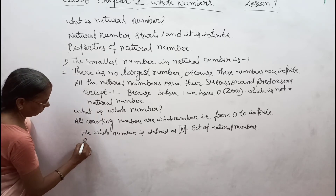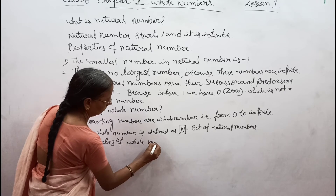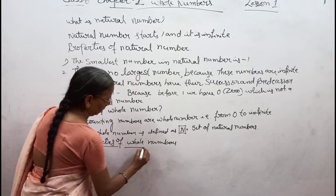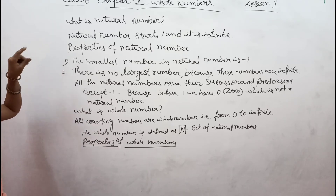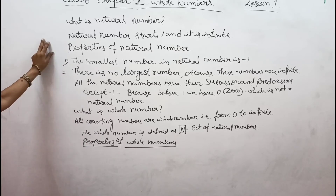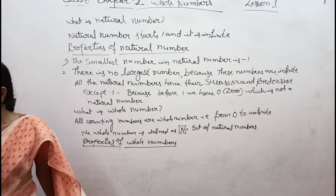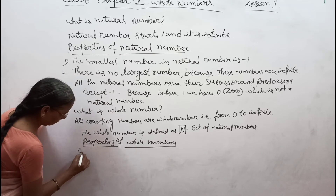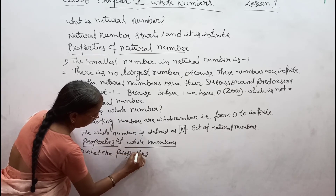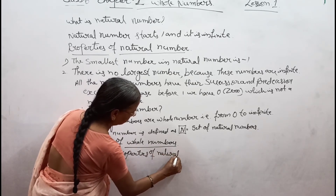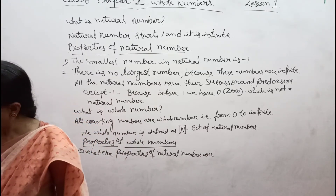Properties of whole number. The first property is that whatever properties of natural number are true are also the same for the whole number.